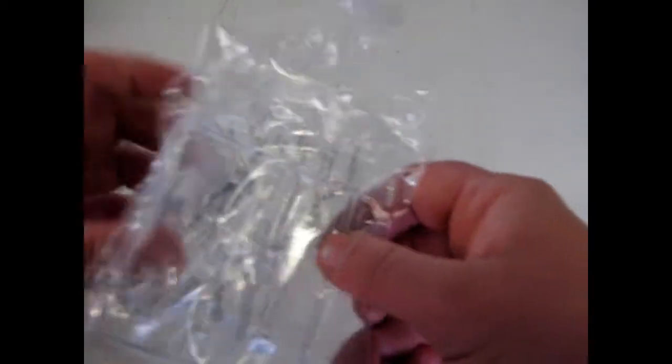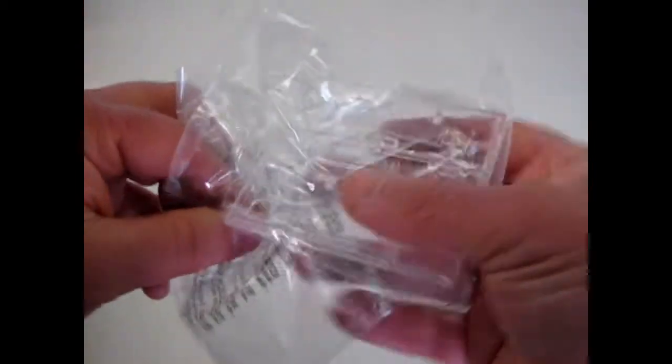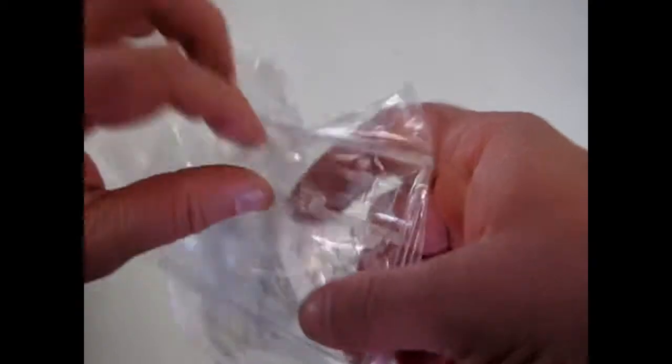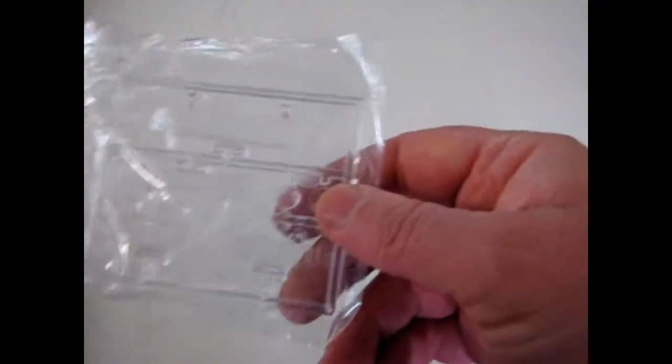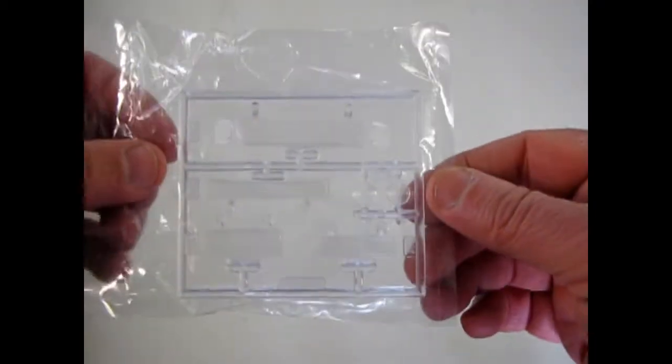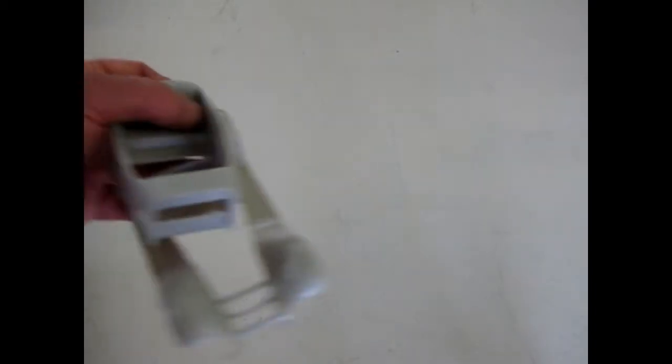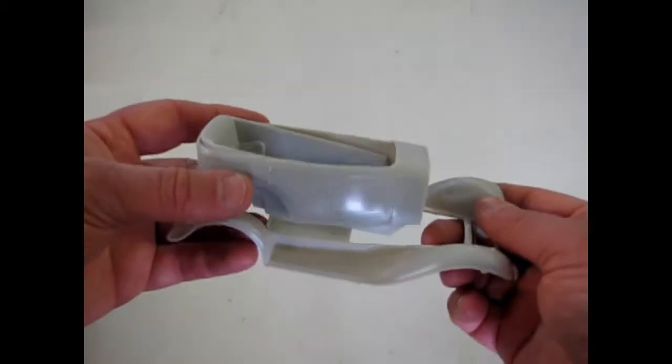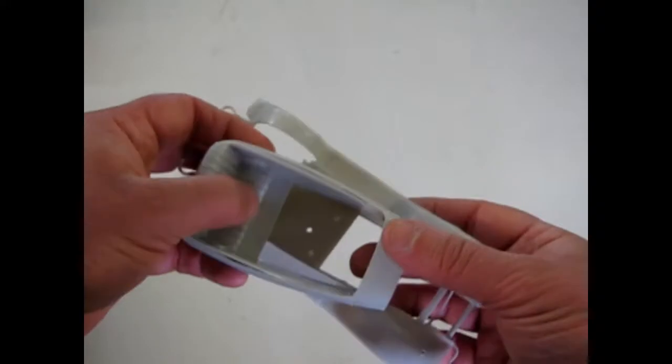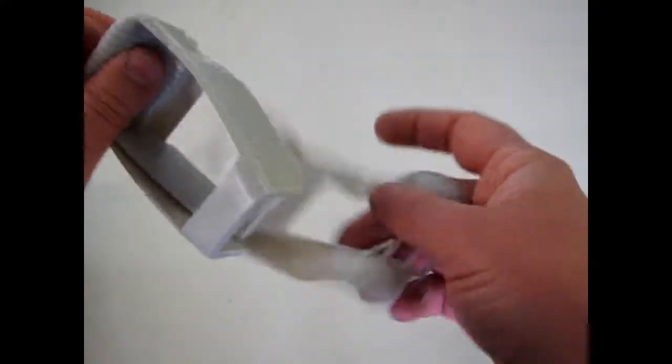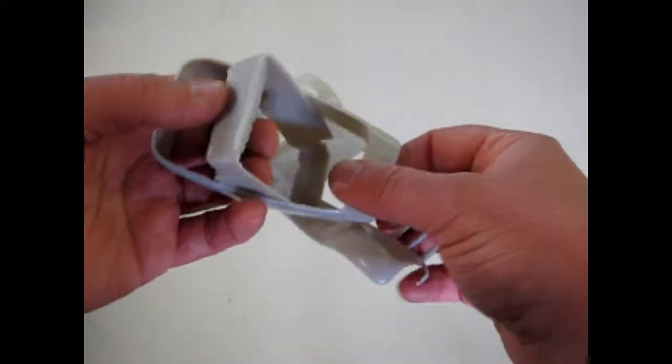And then we have our windows and glass right here, which you can see is always nice and clear. And here we have our fenders, the Phaeton body, and the interior. The interior, of course, comes out, it's separate. And you can glue your dashboard in there.